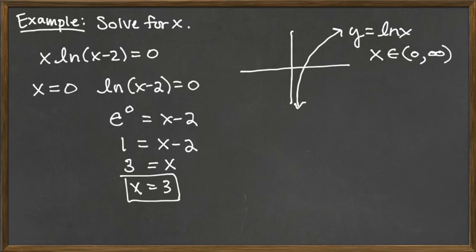We solved, we got x equal to 0, and then we checked to see that that wasn't actually in the domain of the function that we had equal to 0, and so we throw it out. The only solution to this equation is x is equal to 3.